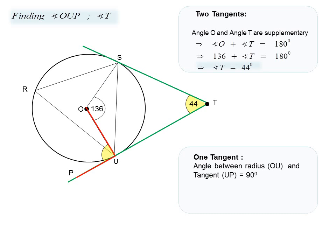Lastly, we notice an angle formed between radius OU and tangent PU. From the theorem, the angle between the radius and the tangent is equal to 90 degrees. Therefore angle OUP is equal to 90 degrees — a very straightforward application of theorems. Please review lesson one if you're not following along.